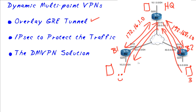Now this GRE traffic that's going across the internet — the problem with that is it's not protected. If anybody on the internet, like a service provider who's moving those packets, is going to be able to see all the content of those packets. That's why we'll traditionally use IPsec — IP security — to encrypt each and every packet before we send them over the network. That's how we can get traffic across the network between multiple sites using GRE tunnels and protecting it with IPsec.